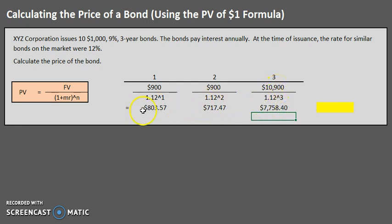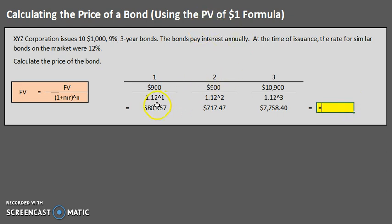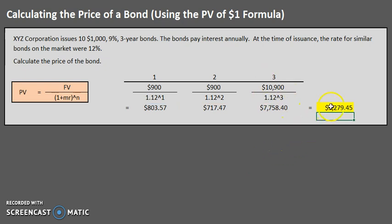All we are doing is finding the present value of each individual cash flow: the interest payment in year one, the interest payment in year two, and the interest payment plus face repayment in year three. The last step is to sum those present values: $803 plus $717.47 plus $7,758.40. That means the price of this bond is $9,279.45.